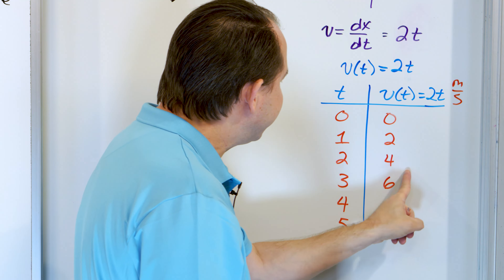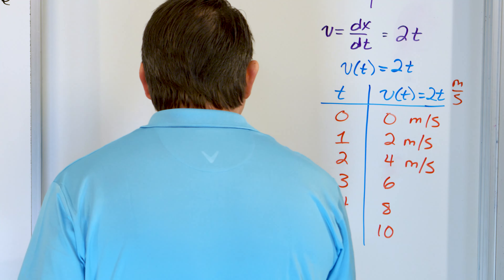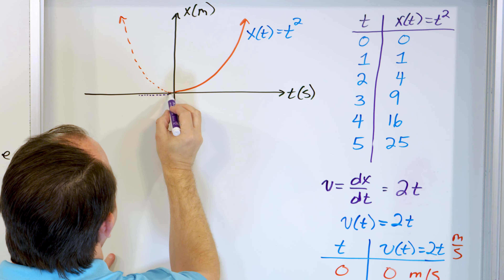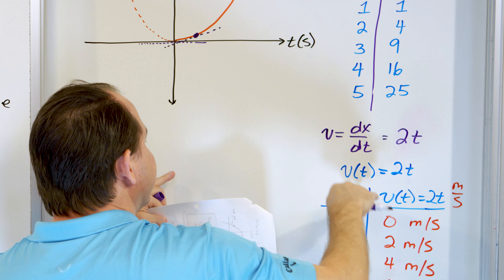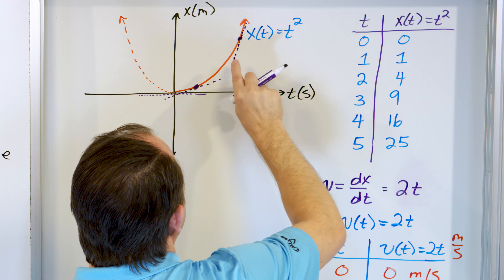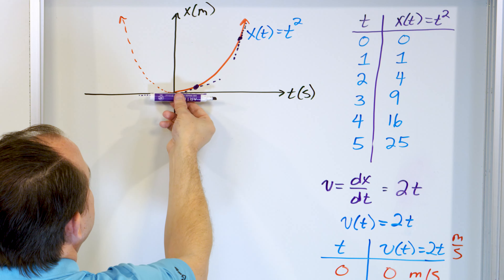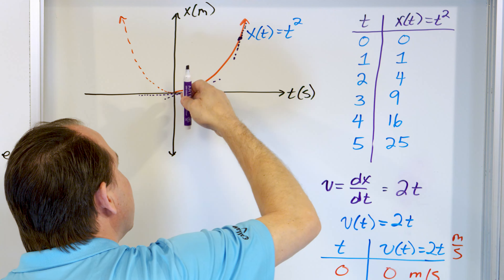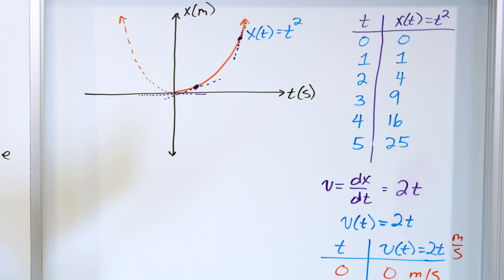This matches exactly what we predicted from the graph. At time zero, the tangent line is flat — velocity is zero. At one second, the slope is a little bigger — velocity is 2. Way over here toward the end, the tangent line is very steep — high velocity. The velocity increases because the slope of every tangent line gets bigger and bigger as we go. So velocity is zero at the start, then bigger, bigger, bigger, bigger — because the tangent line's slope is increasing throughout.